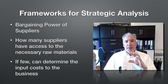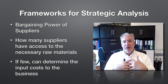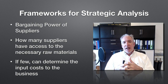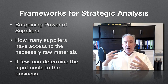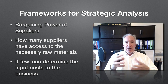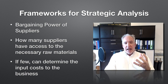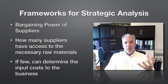The bargaining power of suppliers is the reverse of that. If many suppliers have access to raw materials, they will have relatively weak power because the buyer can play one against the other. However, if a supplier has access to a unique raw material that you can't buy anywhere else, they can set the price they want for that raw material.